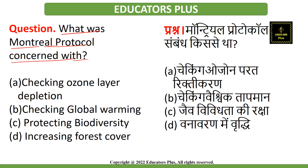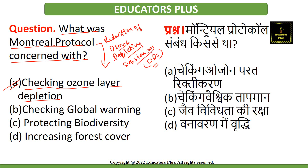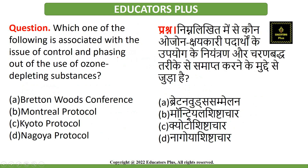The first exam question is: what was the Montreal Protocol concerned with? The correct answer is option A — checking ozone layer depletion. The Montreal Protocol's main agenda was to keep a check on ozone layer depletion and control the substances that deplete the ozone layer.